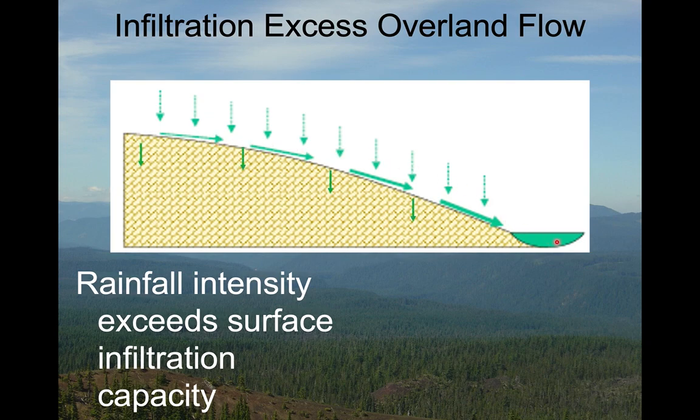More commonly, we get infiltration excess overland flow even in situations where some water can make it into the ground. Picture a very clay-rich soil or a sidewalk with cracks in it. There's some water that can infiltrate, but the rainfall rate is still greater than that infiltration capacity, so the water that can't infiltrate moves over the land surface and into the stream.